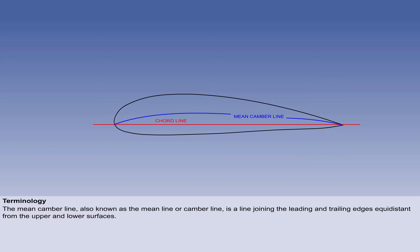The mean camber line, also known as the mean line or camber line, is a line joining the leading and trailing edges equidistant from the upper and lower surfaces.